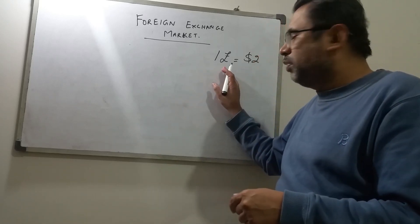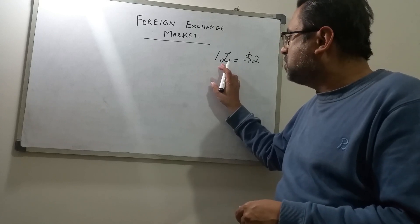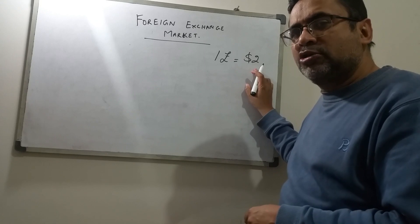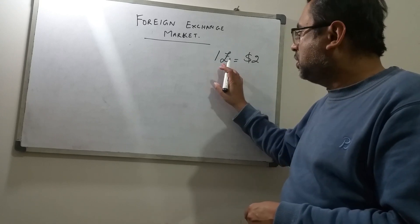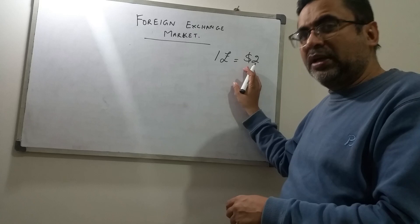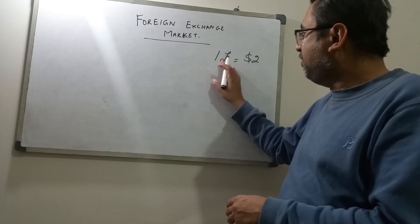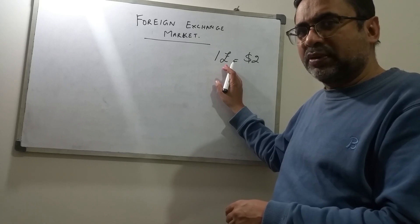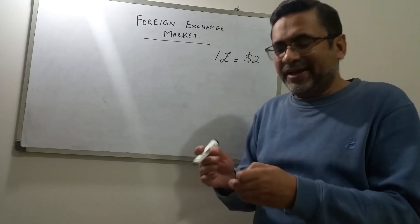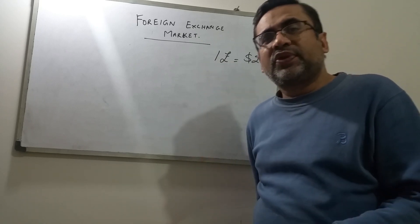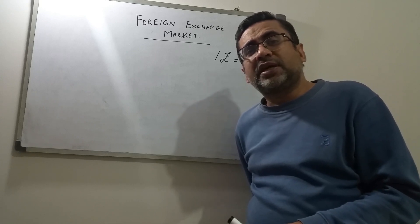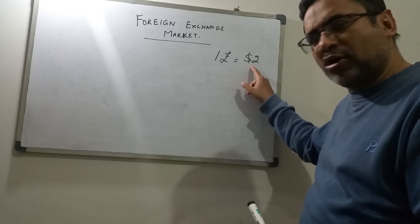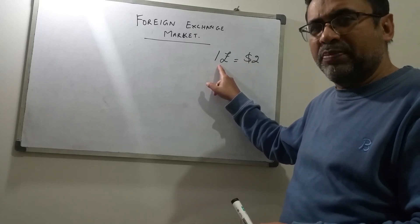So what does this formula show? It shows that one pound can buy two dollars. This formula can be read left to right or right to left — both are possible. The important thing is it shows the value of one currency in terms of another currency. Either one pound can buy two dollars, or two dollars can buy one pound.